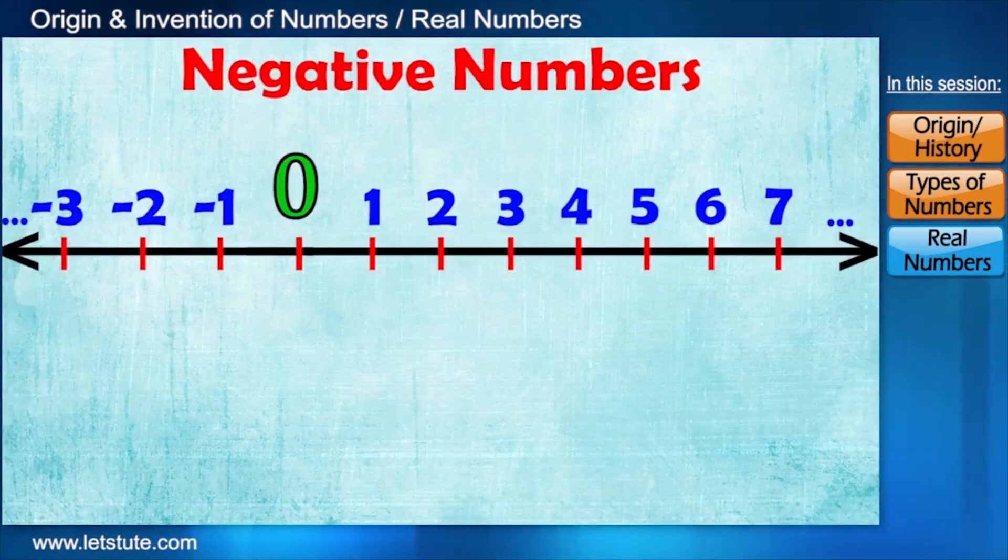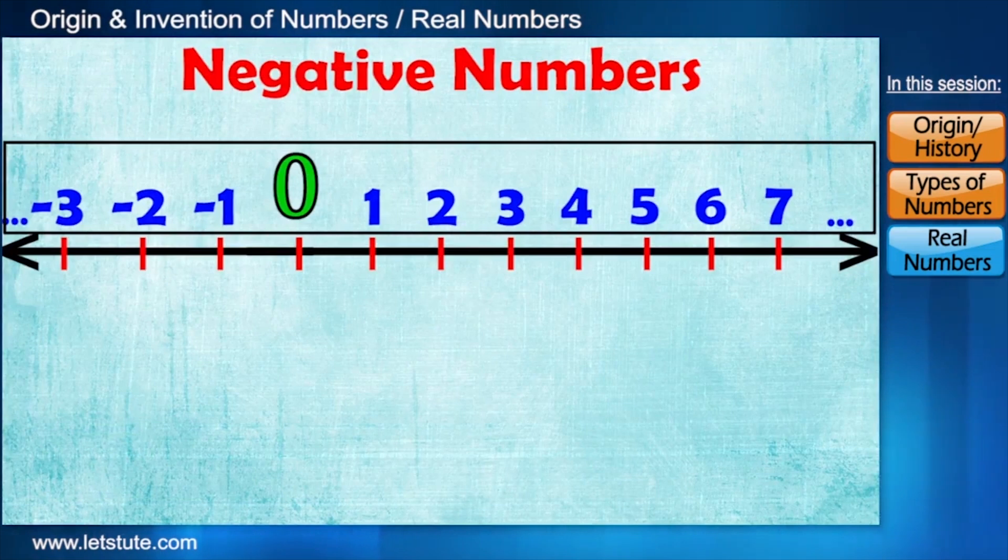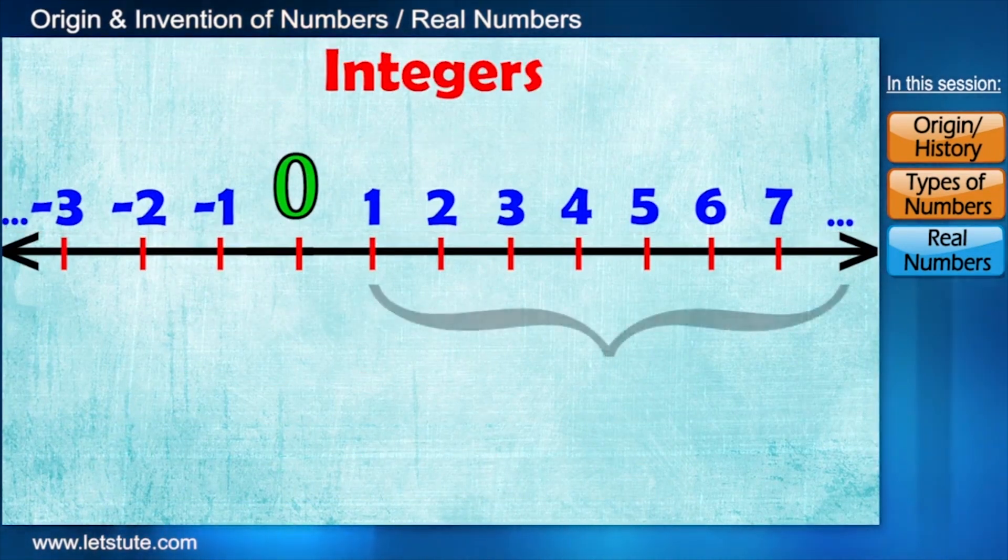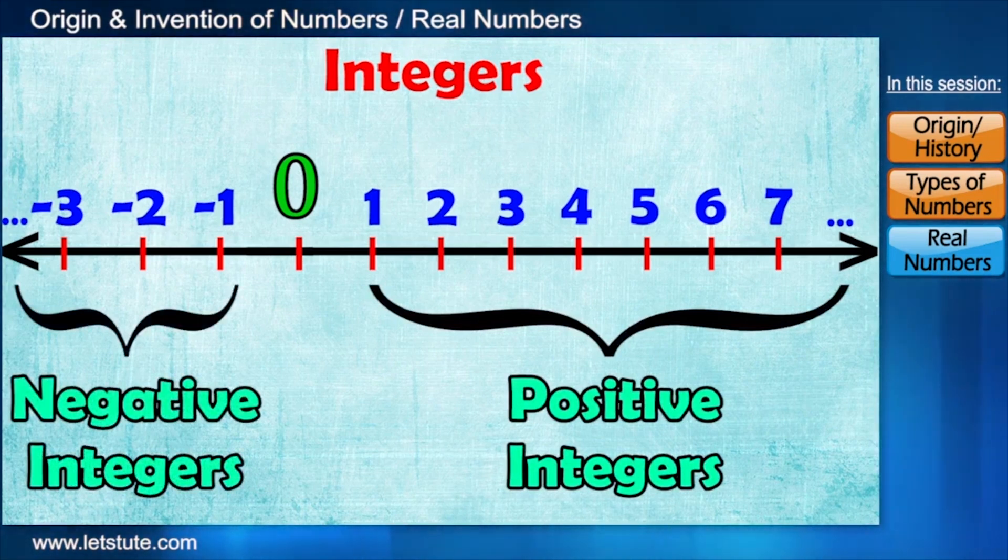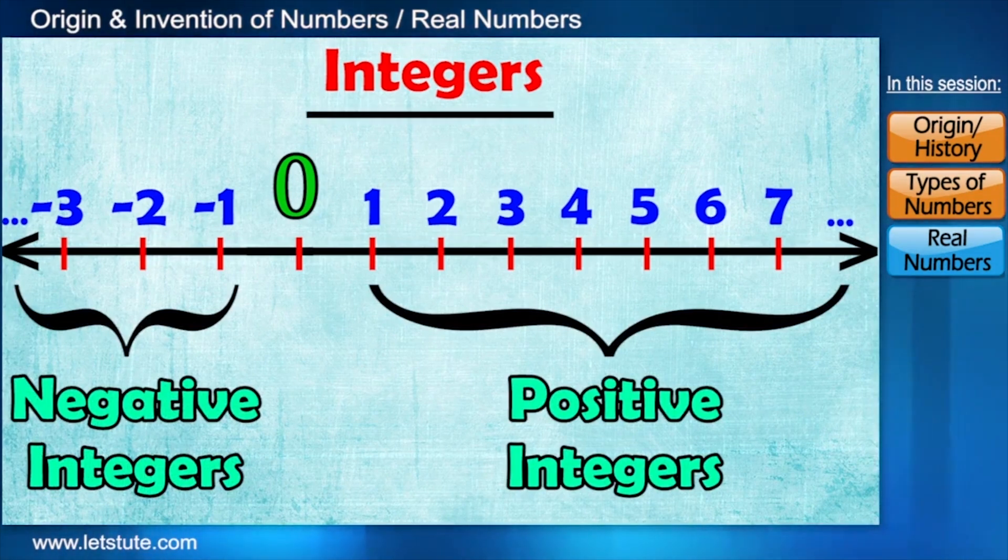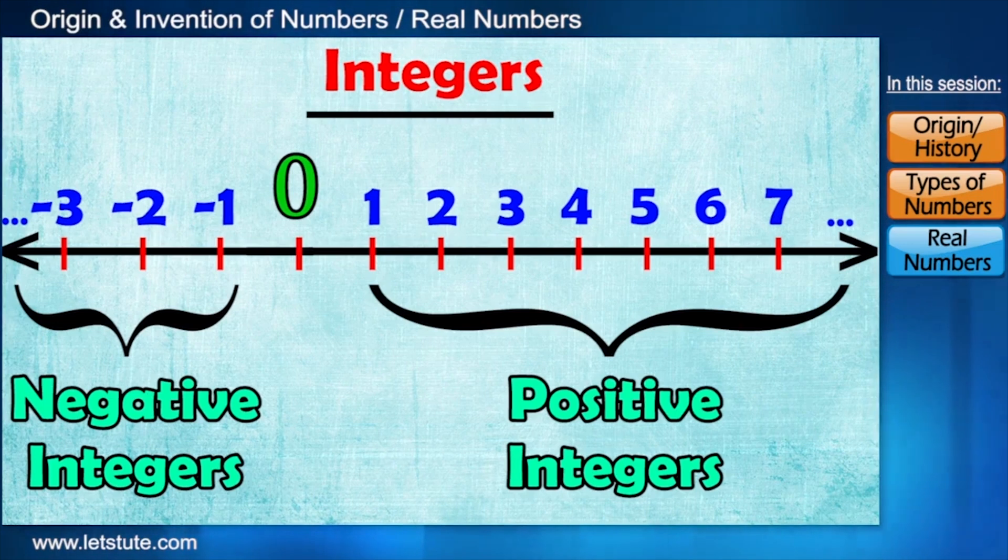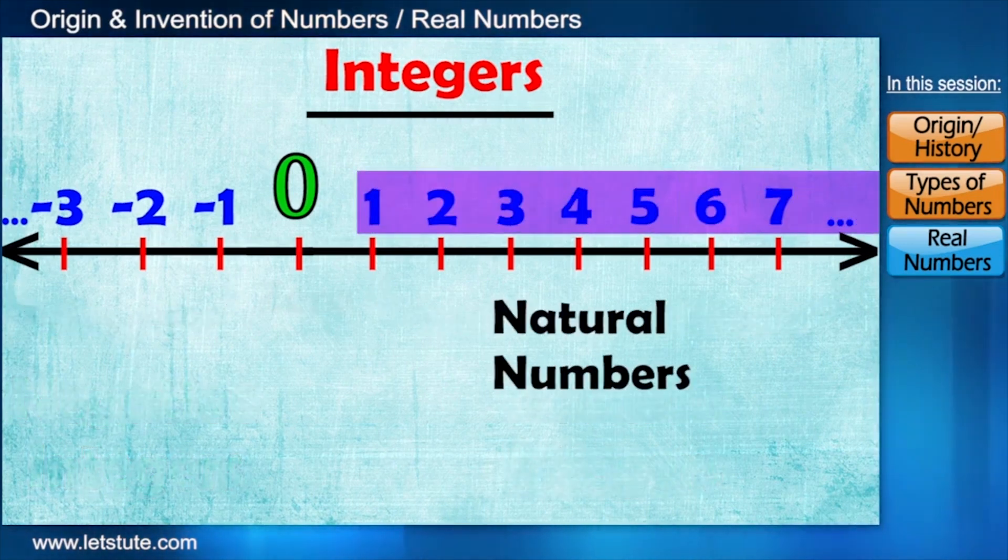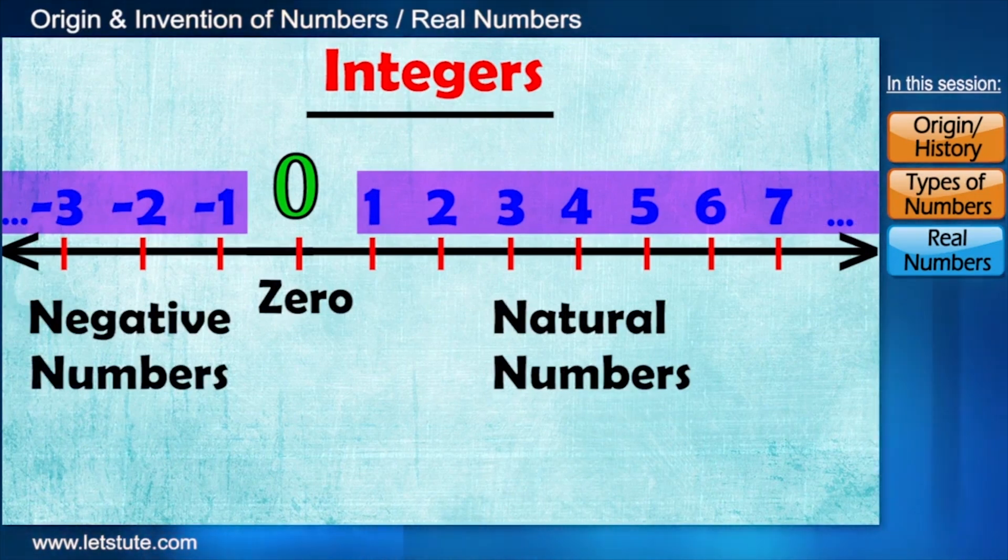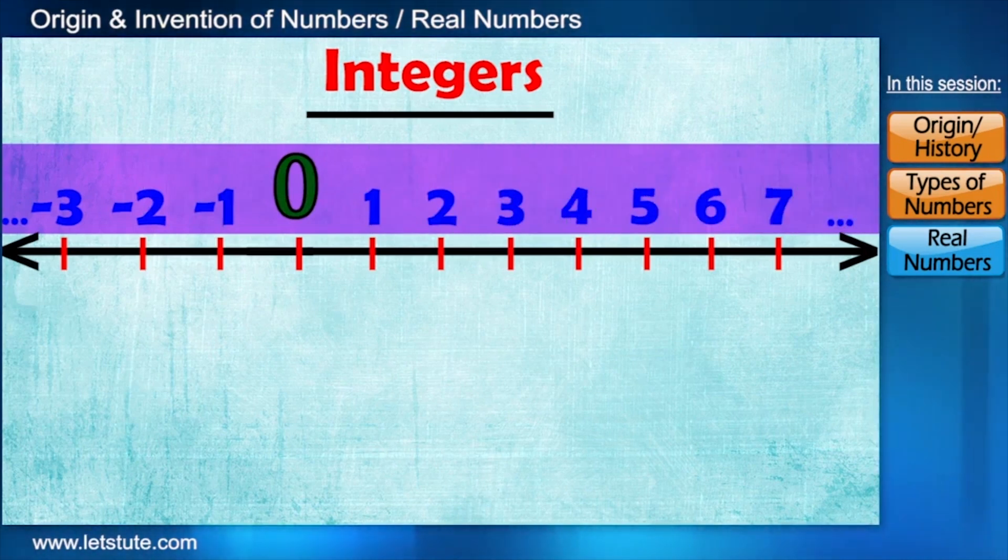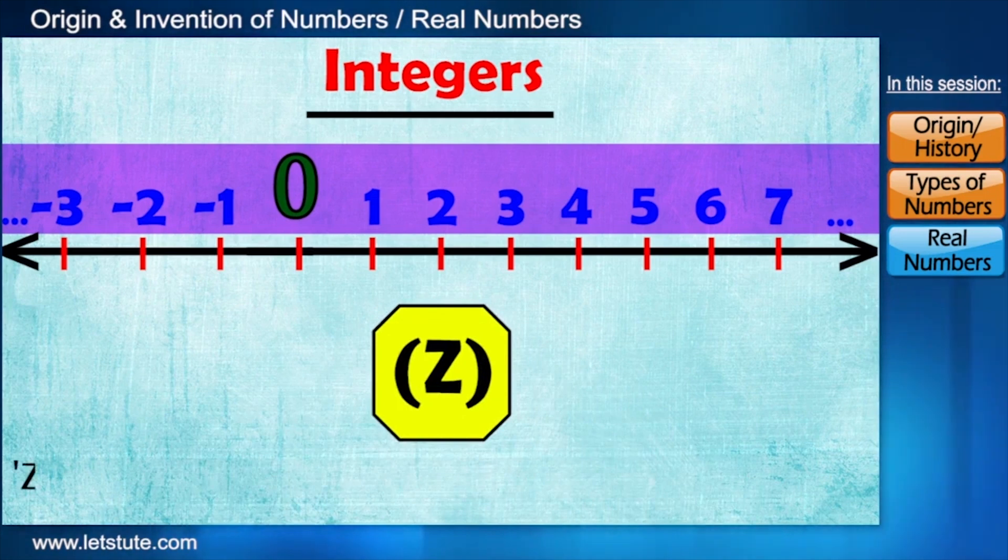Friends, the numbers we can see on this number line are collectively called integers. So positive numbers are called positive integers and negative ones are called negative integers. Again, you must be thinking what the meaning of the word integer is and where it come from. So let me tell you, after natural numbers and 0, negative numbers must have come into the picture. So people thought there must be a name for this new set, which was eventually named as integers. And the set of integers is denoted by the letter Z because Zalem is a word in German, which means numbers.